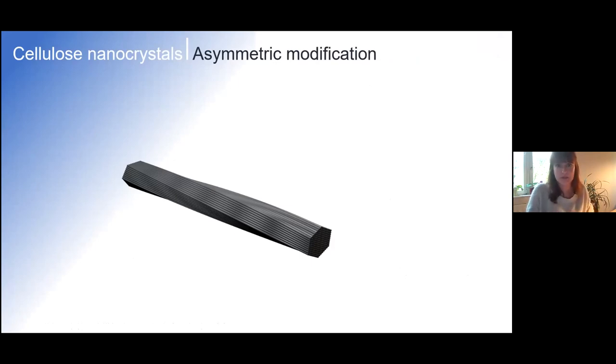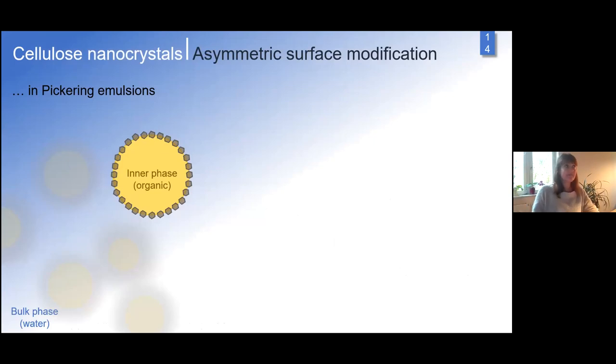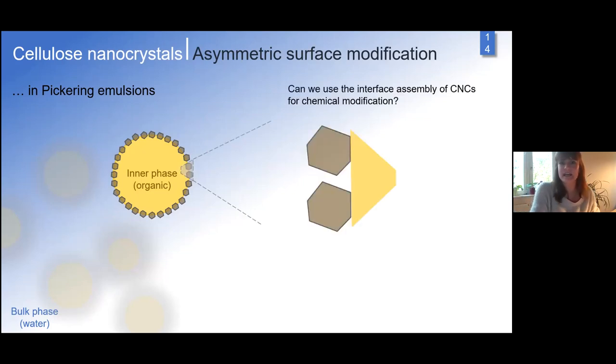That was end-wise modification. Now the question: can we also do asymmetric surface modification? This is more challenging because over the surface we have uniform decoration with OH groups. Maybe there's still a way, something done on silica nanoparticles and gold nanoparticles but not yet on cellulose nanocrystals. The system we use is Pickering emulsions: a biphasic system, an oil and water emulsion with particles stabilizing the interface based on minimization of interfacial energy.